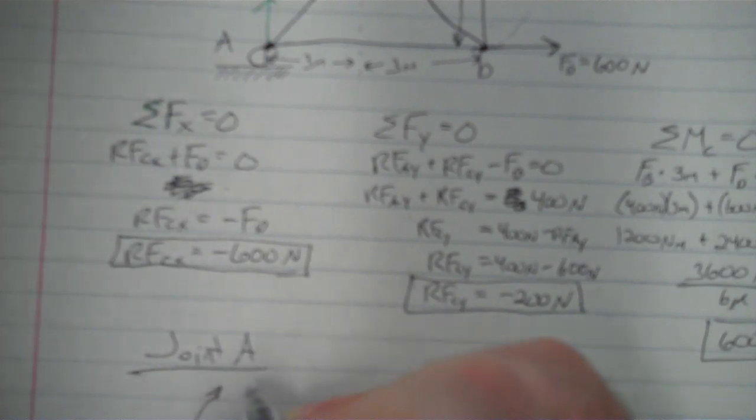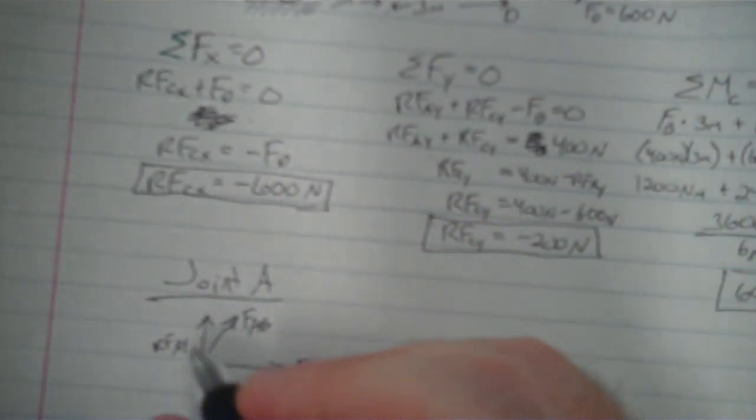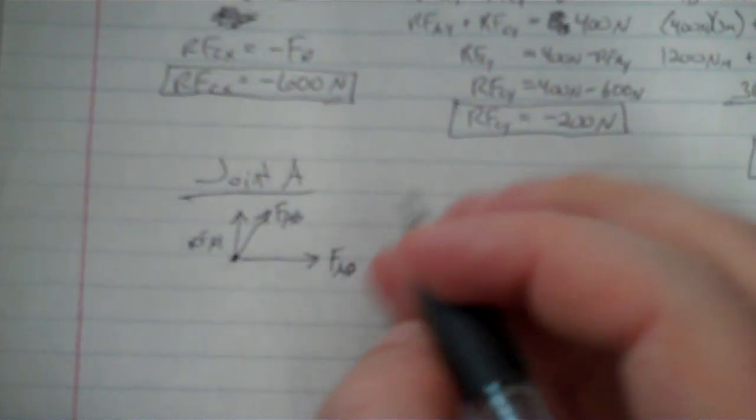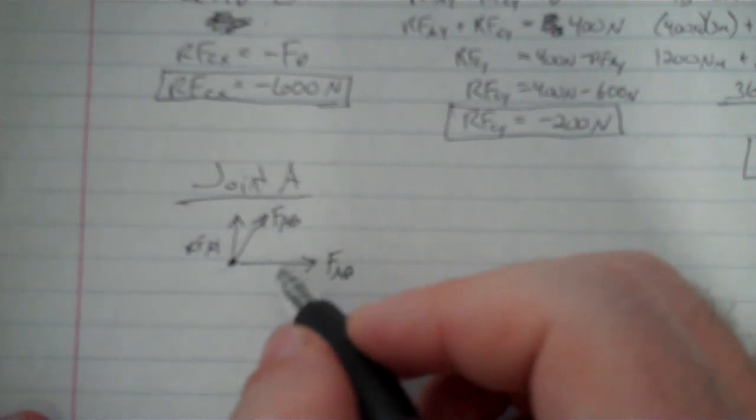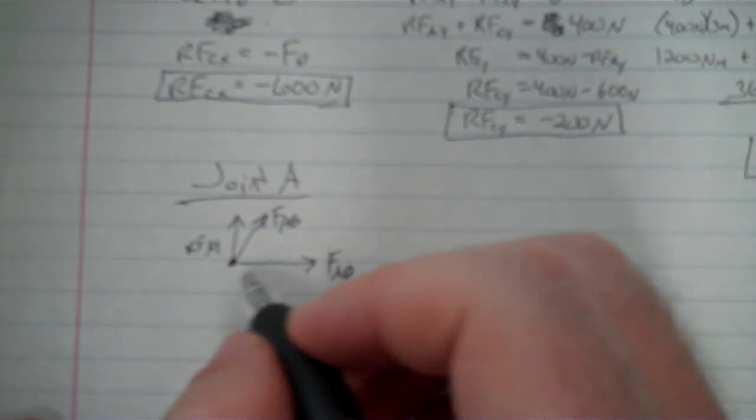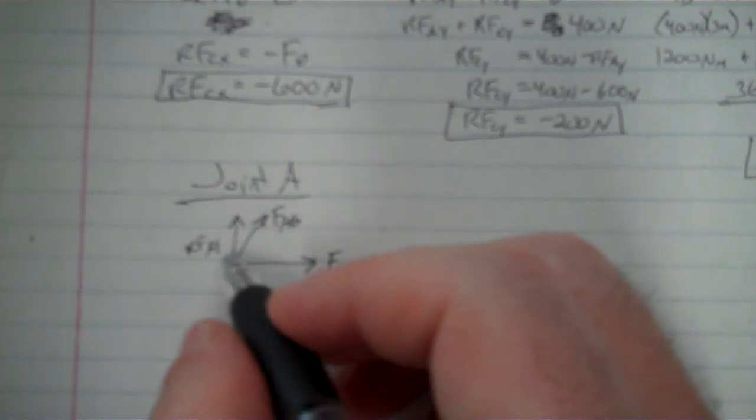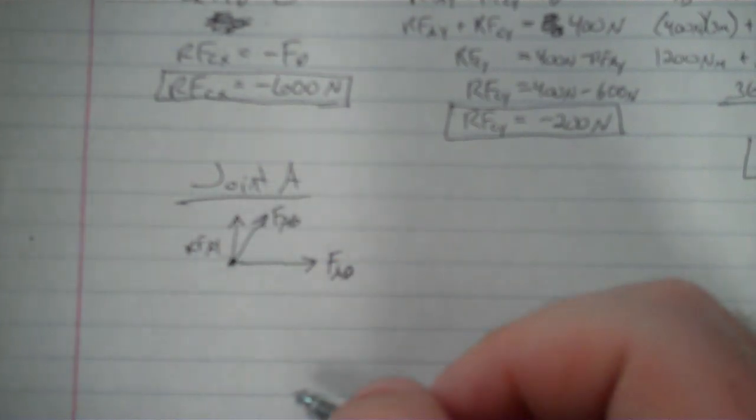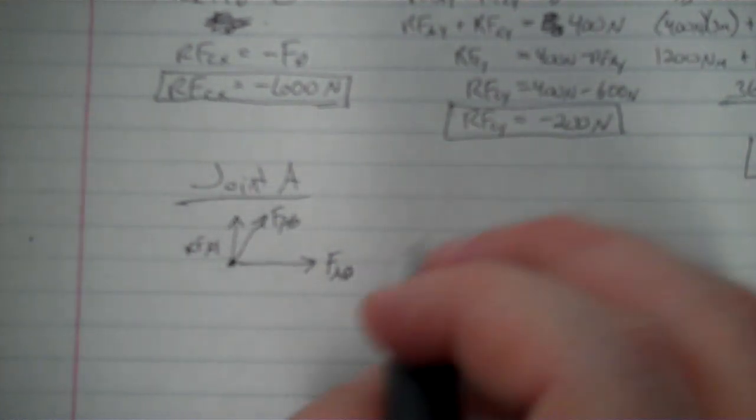I have the force of member AB, which we eventually want to find right there. And I have a reaction force, RFAY. So those are the three forces I have in here. Obviously, as they are right now, these don't cancel. So some of these are probably going to end up being negative. Now we know RFAY is positive, so that's true.